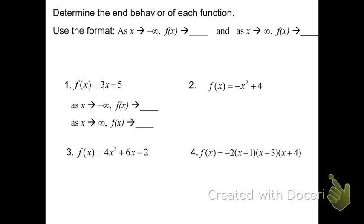Let's look at some examples. Here we've got a linear function: f of x equals 3x minus 5. Looking at 3x minus 5, I see that it's first degree, which means it has an odd degree. The 3 is positive, so I'm looking at an odd degree with a positive coefficient. In this case, the left side of the graph will be going down and the right side goes up. So as x approaches negative infinity, f of x goes to negative infinity. As x goes to positive infinity, the line is going to be rising, which means f of x will be going to positive infinity.